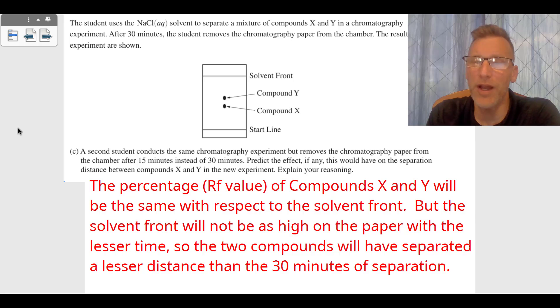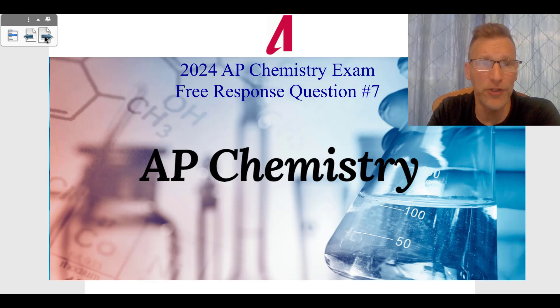Well, if compound X and Y don't go up as far, the solvent front won't be as high on the paper either with this lesser time. So the two compounds will have separated a lesser distance than the 30 minutes of separation. So it's going to separate a lesser distance just because the solvent front just didn't move up that high. If the solvent front moves even higher, they separate out even more, keeping the same percentage of RF value.